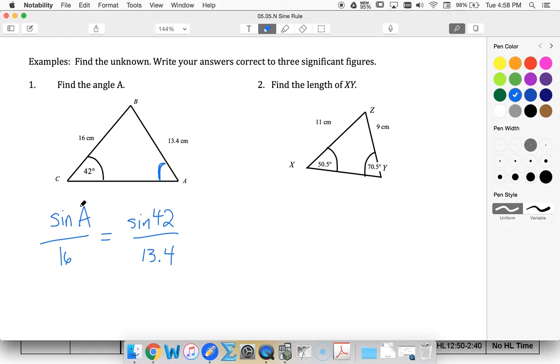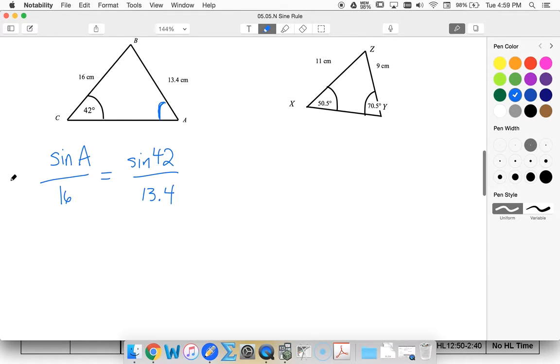Now I want my angle A, so I need to get rid of this divided by 16. So sine of A is divided by 16. Opposite of dividing by 16 is multiplying both sides by 16. So this is going to cancel.